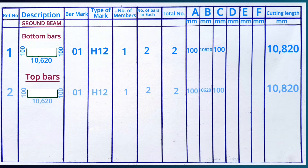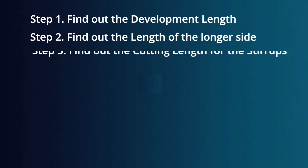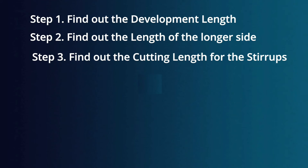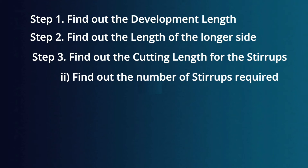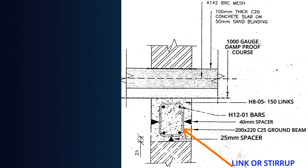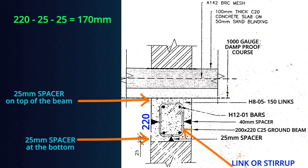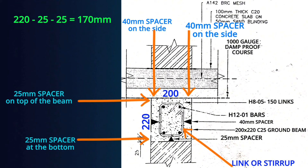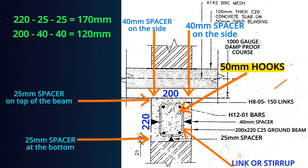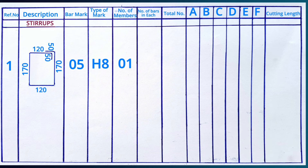A beam has both top bars and bottom bars — do the same also for top bars. The third step is to find out the cutting length of the stirrups or links and also the number of stirrups required. We get the depth of 220mm, deduct 25mm cover at bottom and 25mm on top to remain with 170mm. For the width, get 200mm and deduct 40mm on each side to remain with 120mm. The hooks are taken as 50mm throughout the entire project. Bar mark is 05, type of mark as H8, and number of members as one.